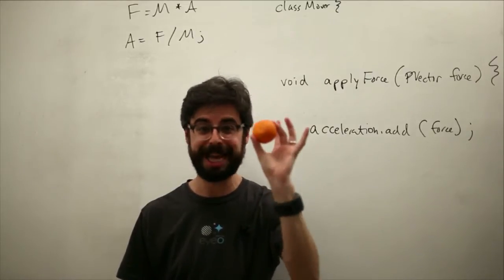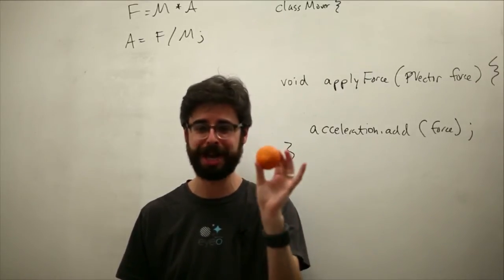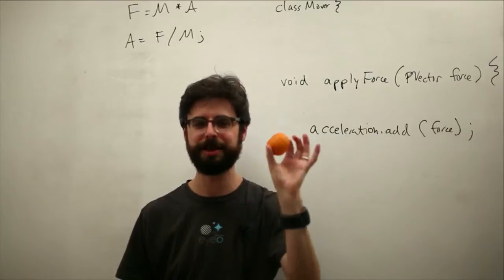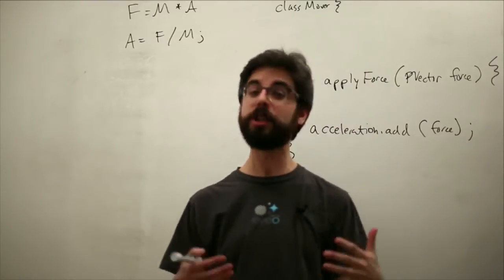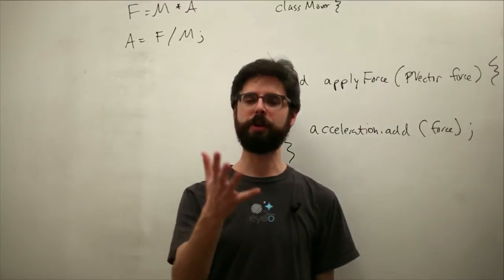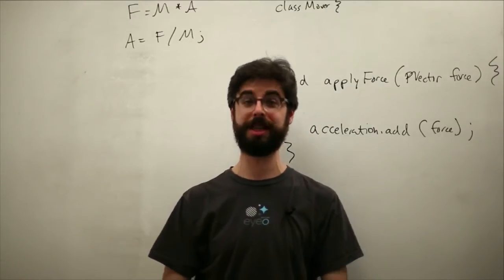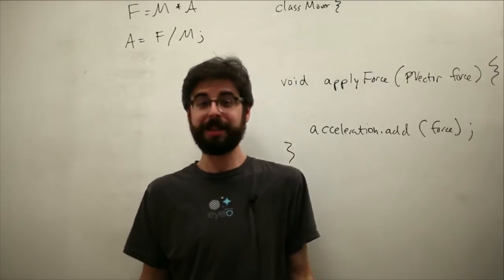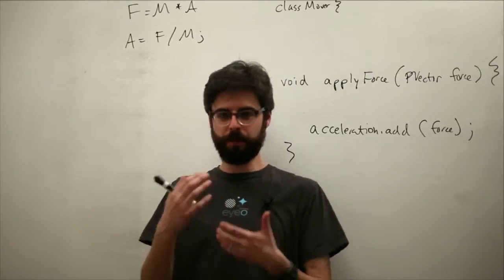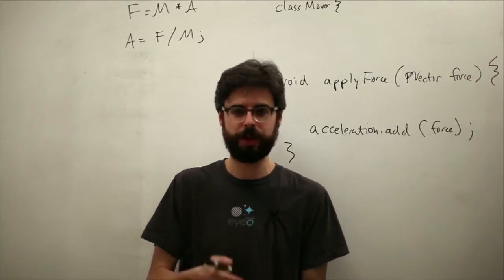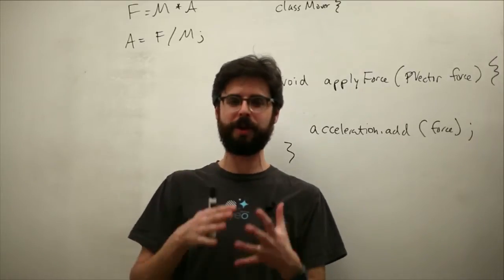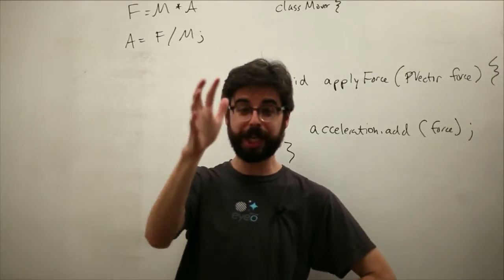Mass is the amount of matter in an object. This object has the same mass here on the earth, out in outer space, on the moon. It's the amount of matter in an object. We measure it in kilograms. Weight, by the way, which is often confused for mass, is the force of gravity on an object.